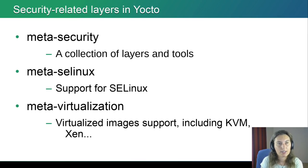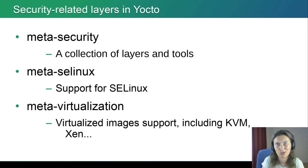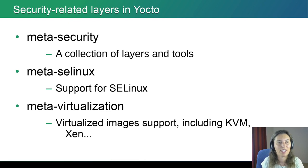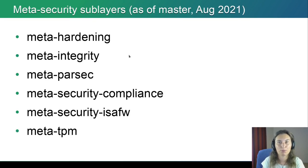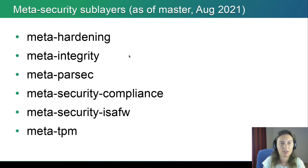There are many different rules and means to do hardening, and some of them are available in meta-security. The meta-security layer is part of security-related layers in Yocto: you have meta-security, meta-SELinux containing support for SELinux, and meta-virtualization which can be considered security-related too because it provides support for virtualized images. Meta-security on its own is a collection of layers and tools — as of the master version from August 2021, it includes meta-hardening, meta-integrity (giving tools for verification of the system image), POSIX security compliance checking, and more.